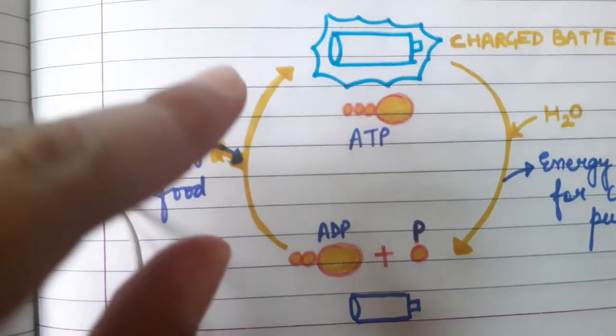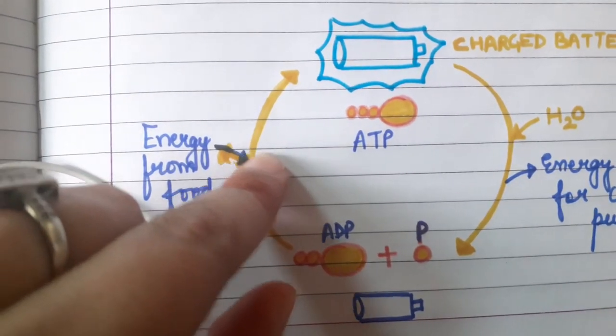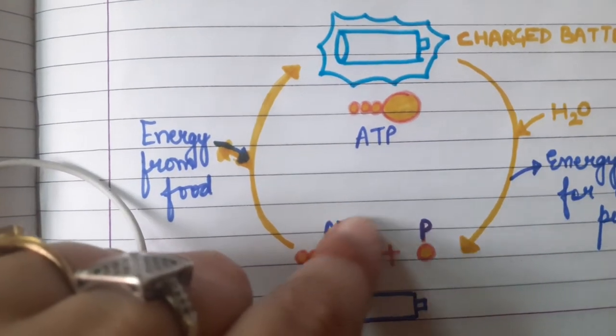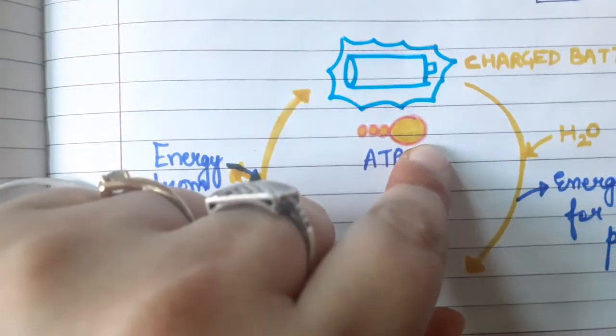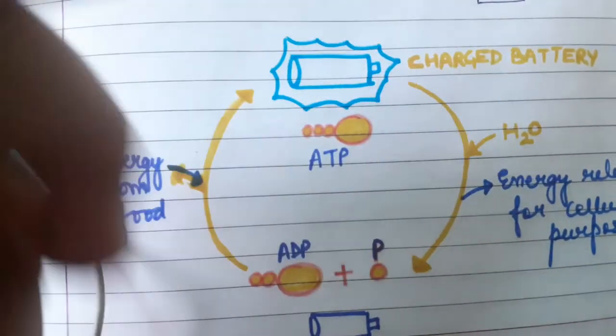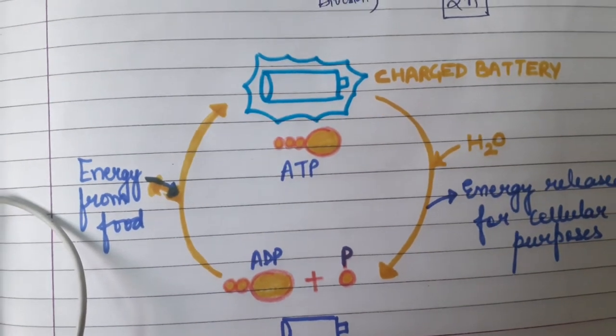And we change it into energy. Then that energy from the food binds this ADP again to the free phosphate molecule and leads to formation of ATP molecule. And again, we have a charged battery. This is how the ATP ADP cycle works.